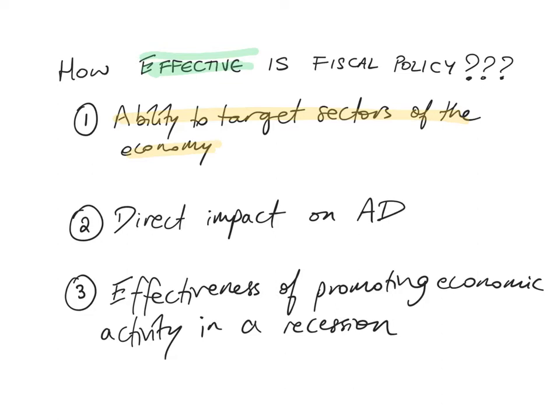The second strength or advantage is its direct impact on aggregate demand. An expansionary fiscal policy will directly increase aggregate demand, while a contractionary fiscal policy will directly decrease aggregate demand. Its third strength is its effectiveness in promoting economic activity in a recession.